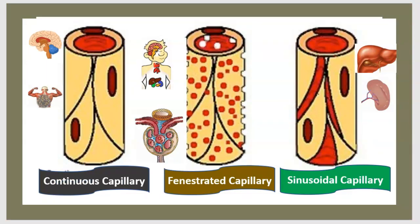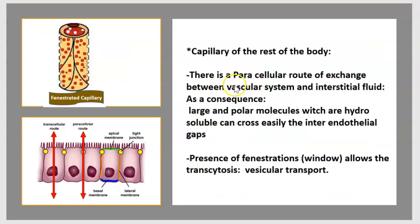There are three types of capillaries: continuous capillaries in the brain and muscle; fenestrated capillaries in endocrine glands and glomeruli; and sinusoidal capillaries in the liver and kidney. In most capillaries of the body, there is a paracellular route of exchange between the vascular system and interstitial fluid. As a consequence, large polar hydro-soluble molecules can cross easily through the inter-endothelium gaps. The presence of fenestrations, or windows, allows transcytosis — vesicle transport.